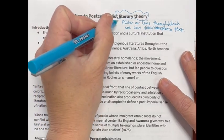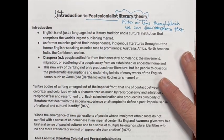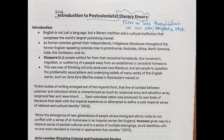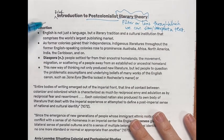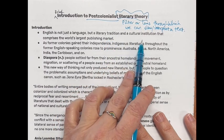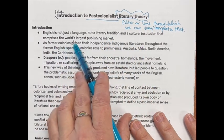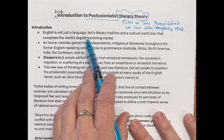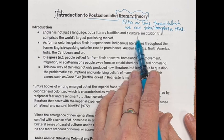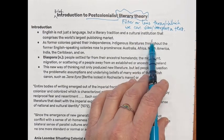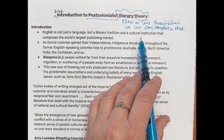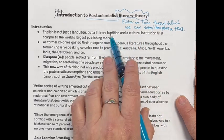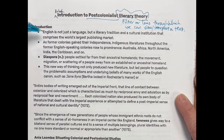So that's kind of what we've got going here in terms of post-colonialism. We'll get into a strict definition in a little bit, but some introductory points are worth starting with. English is not just a language but a literary tradition and a cultural institution that comprises the world's largest publishing market — not just something we speak in class, but film, television, music, all that kind of stuff forms this whole body that culture is partly made of.